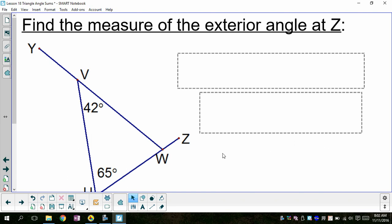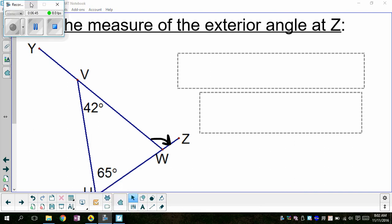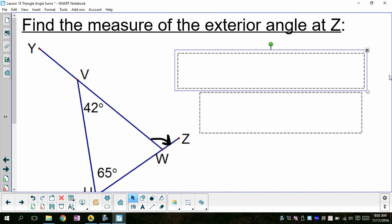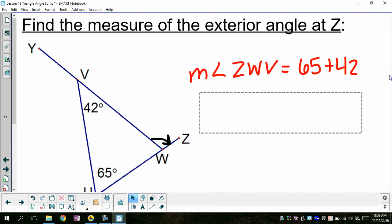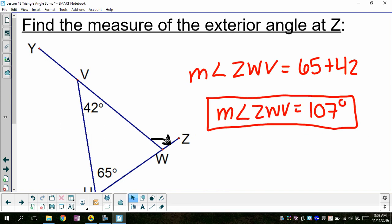So pause the video here and I want you to find the exterior angle. I should have wrote at W. I apologize for that. This guy right here, find the measure of that angle. So all we need to do is add those two remote interior angle measures together, 65 plus 42. And we get this exterior angle ZWV to be 107 degrees.